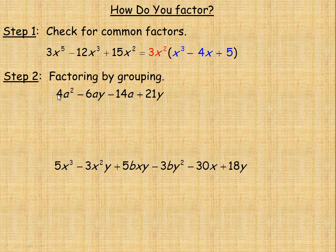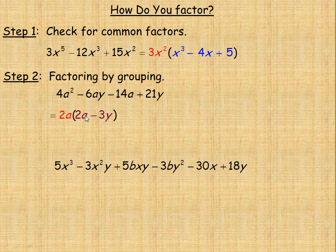I'm going to group the first two terms together. For 4a squared minus 6ay, the common factor is 2a — because 2 goes into both numbers evenly and there's an a in both terms (one is a squared and one is a). So we factor 2a out, put a bracket, and divide each term by 2a. 4a squared divided by 2a gives 2a, and negative 6ay divided by 2a gives negative 3y, since negative 6 divided by 2 is negative 3, the a divides out, and y remains.